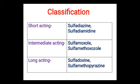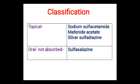Intermediate-acting (5 to 9 hours): sulfamoxazole and sulfamethoxazole. Long-acting group: sulfadoxine and sulfamethopyrazine. Topical sulfonamides: sodium sulfacetamide, mafenide acetate, and silver sulfadiazine. The last group — orally given sulfonamides not absorbed — includes sulfasalazine.